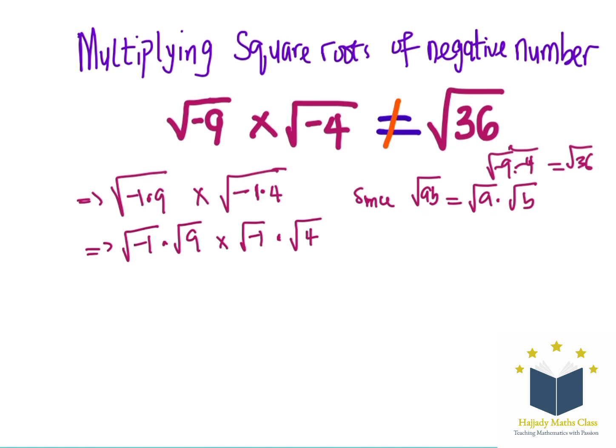Now, also, we have that the root of negative 1 is the same thing as i, which is the complex number.